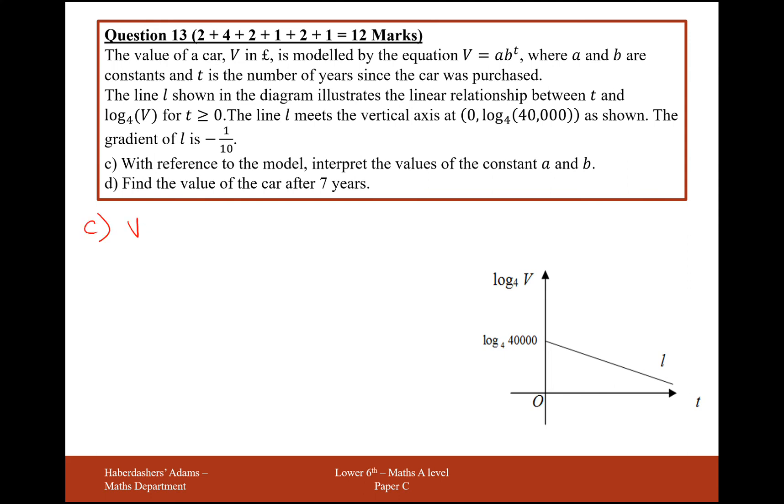Moving on to part c. So v equals 40,000 times 0.87055 to the power of t. With reference to the model, interpret the values of constants a and b. So for the value a, the 40,000 refers to the initial price of the car. Now the reason that is, is if you plug 0 into this formula here, 0.87055 to the power of 0, anything to the power of 0 is 1. So it's 40,000 times 1, which means that refers to it being initially the price of the car.